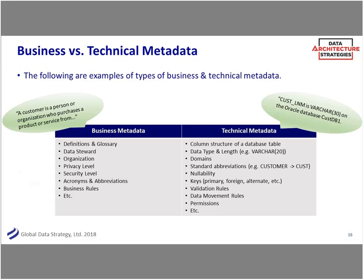There are two main categories of metadata: business metadata and technical metadata. Business metadata includes what we mean by a customer — a person or organization, B2B or B2C, who purchases a product or service — as well as data stewardship, privacy levels, and acronyms. Technical metadata is more like your data dictionary: column structure, data type and length, nullability rules, how data is moved, what server it's on. Both are important if you really want to understand the context of your data.